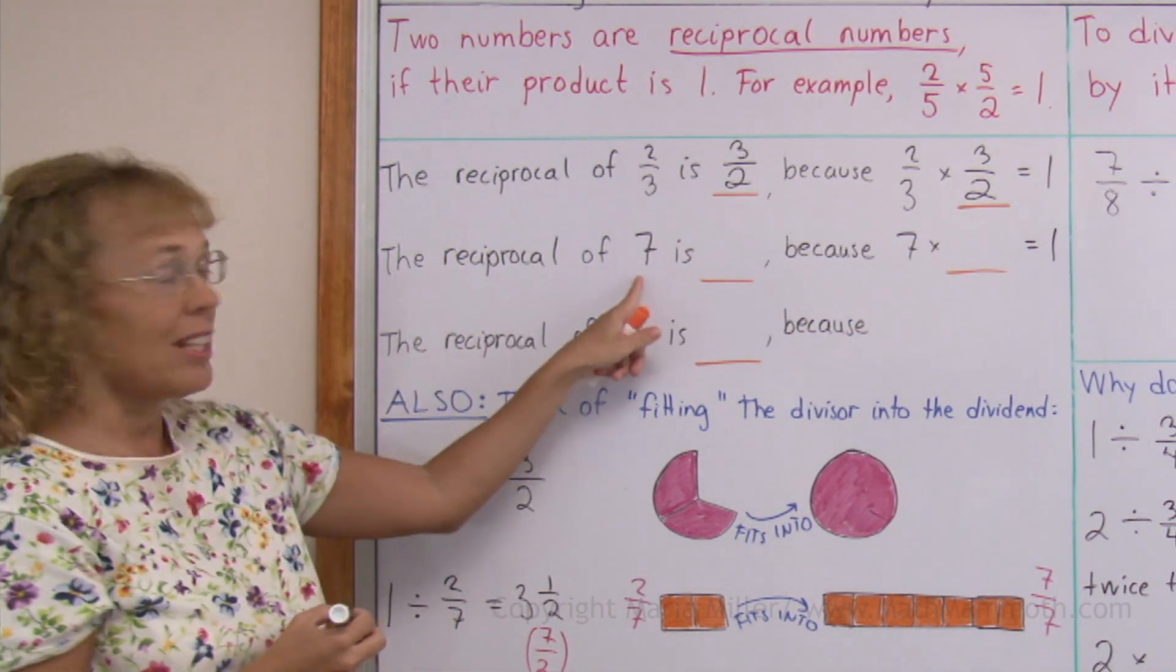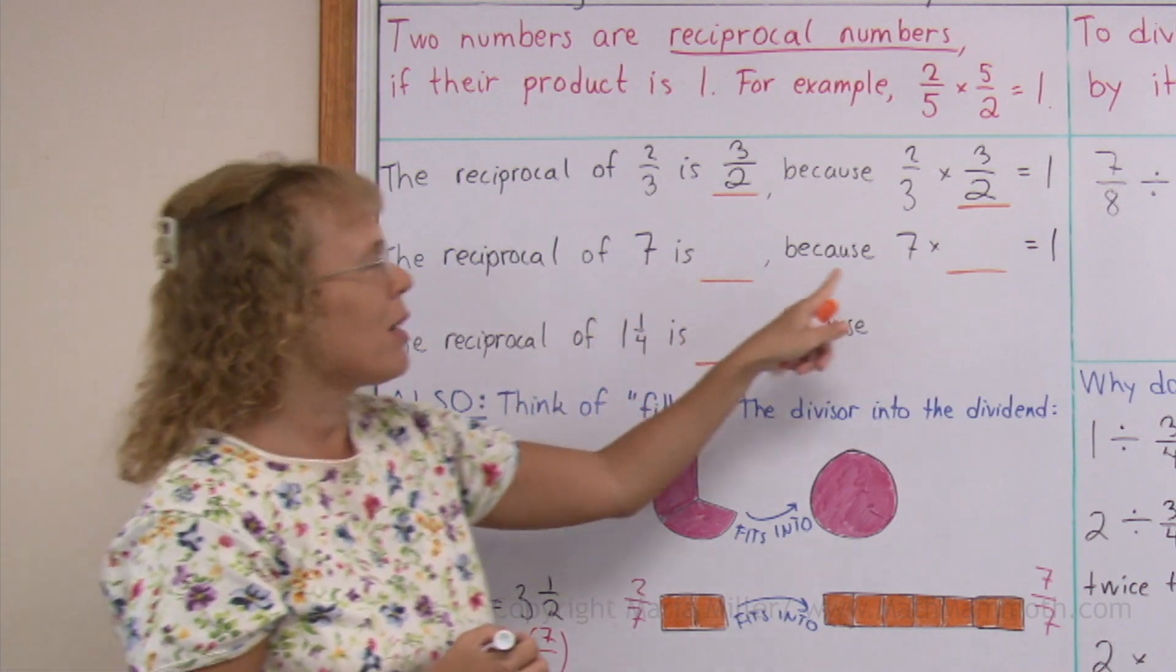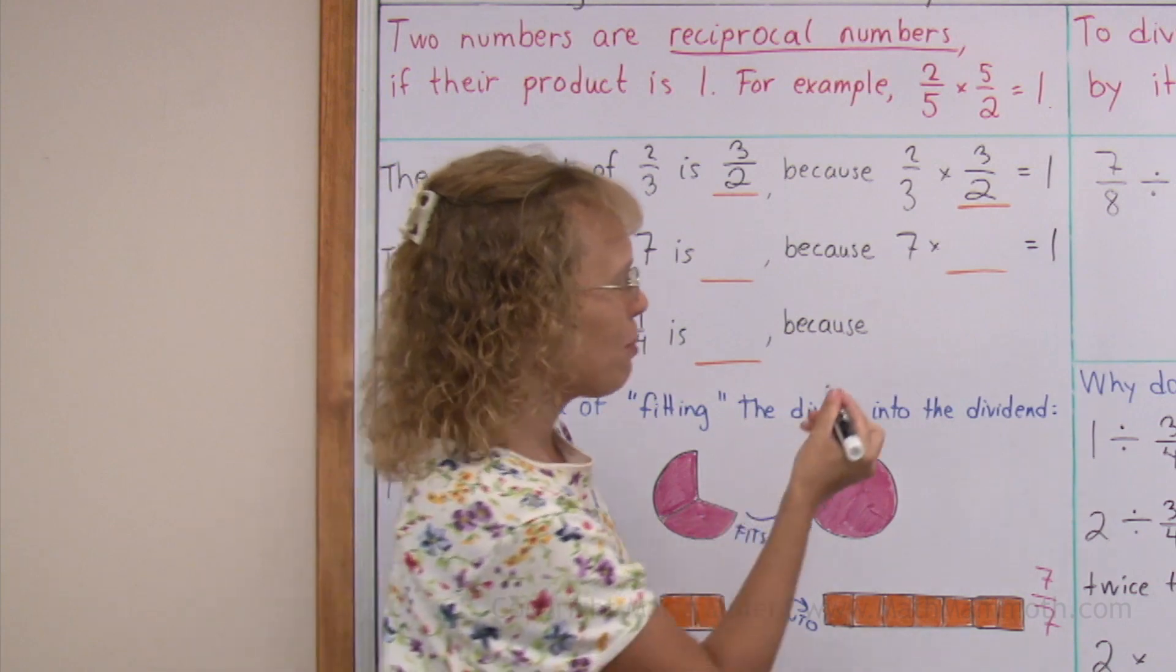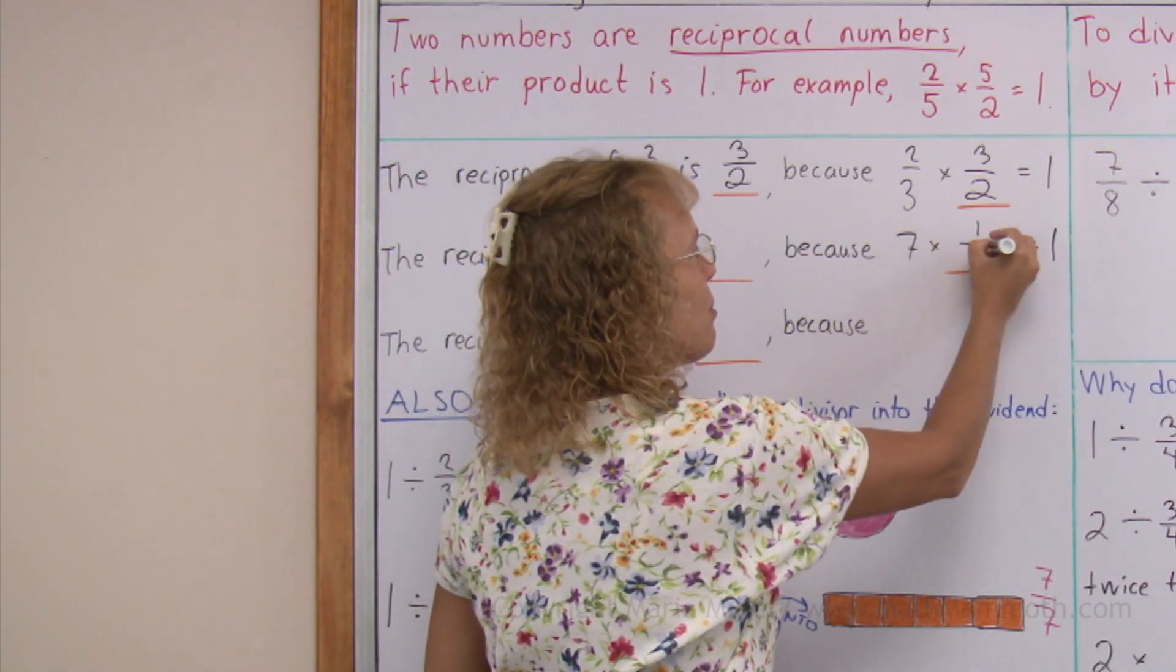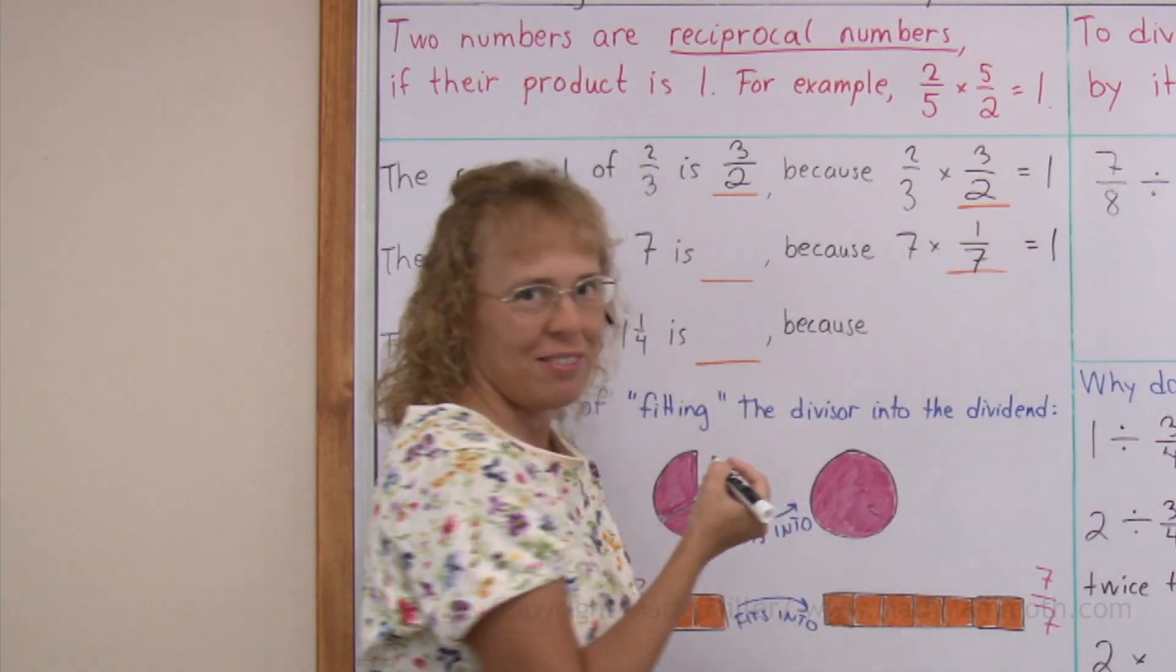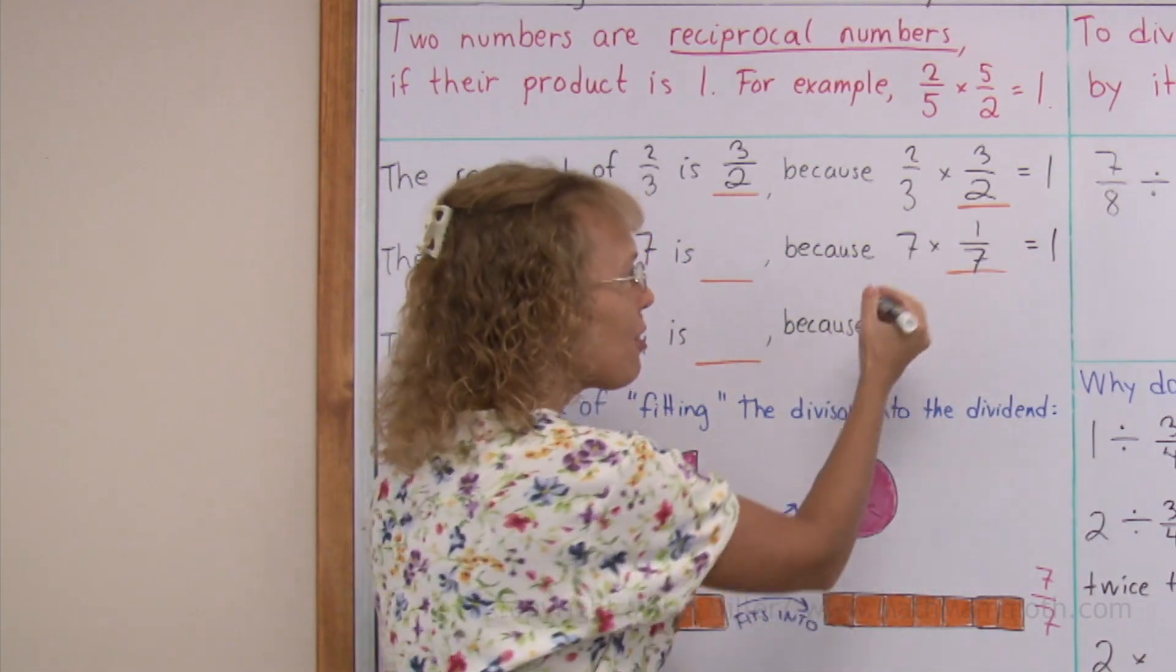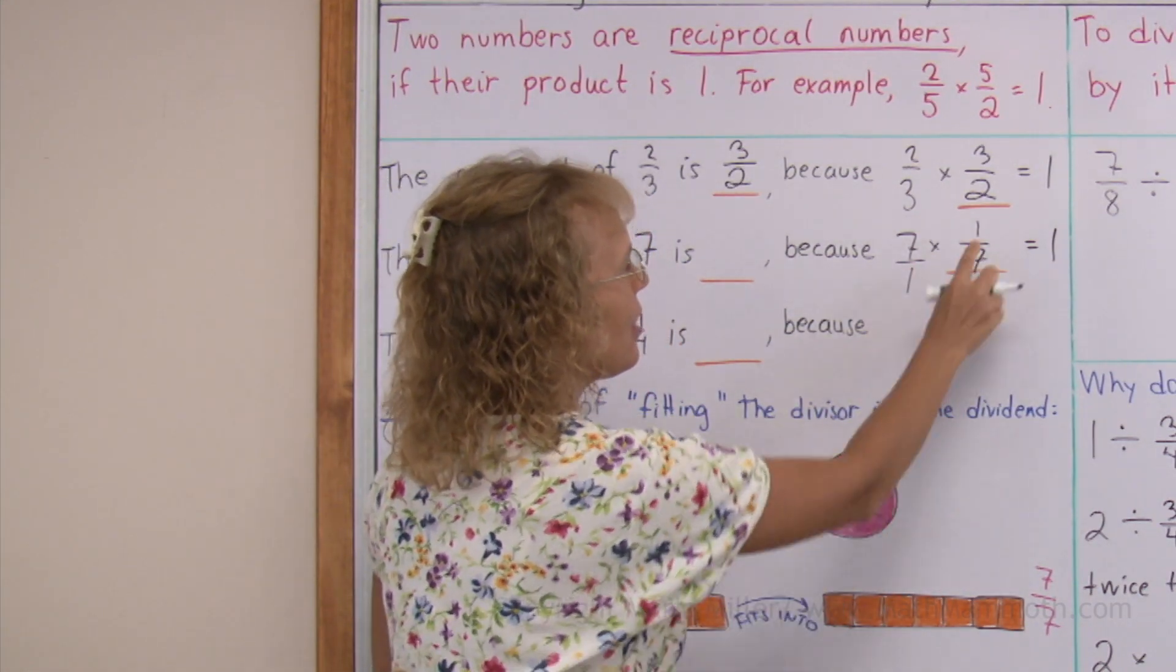The reciprocal of 7. Think about this multiplication here. 7 times what equals 1? You can probably see that 7 times 1 seventh, right? Over here there's a flipping too. If you think of this as 7 over 1, then this is 1 over 7.